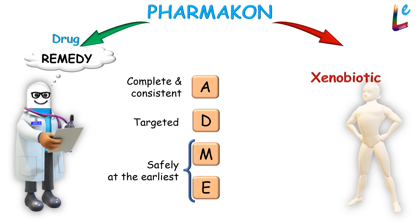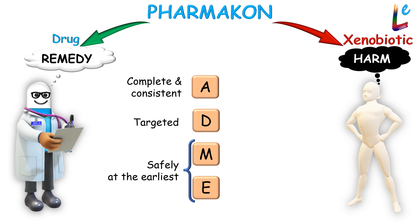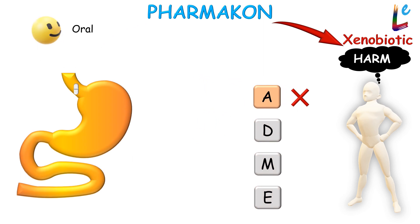Since a xenobiotic is not part of normal physiology, the body assumes that it is likely to cause harm. With this perspective, the body will try to restrict its absorption and distribution, while promoting its metabolism and excretion. For example, for an orally administered drug, common side effects include nausea, vomiting, and diarrhea — with these, the body is trying to get the drug out of the gastrointestinal lumen.